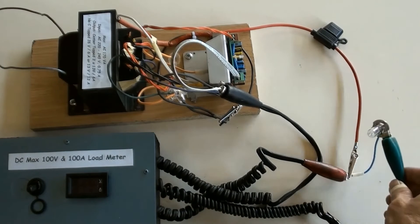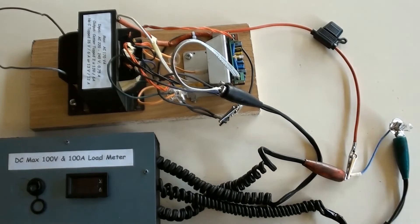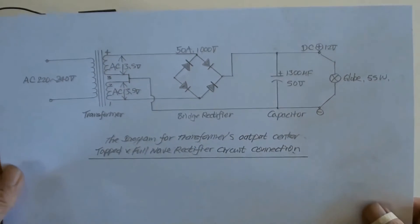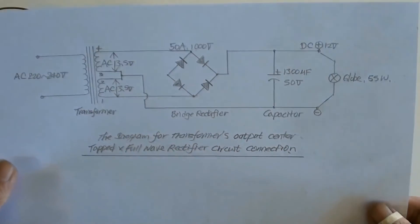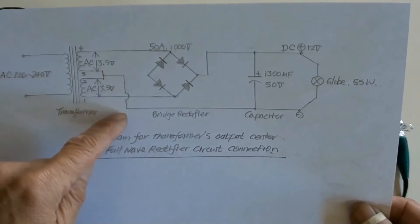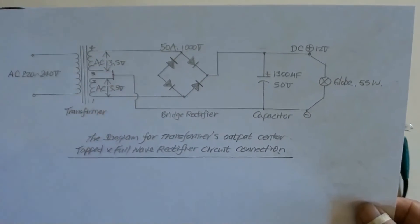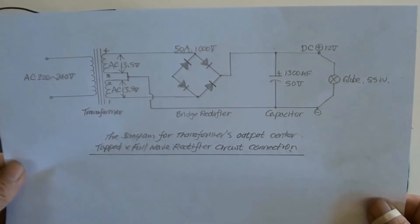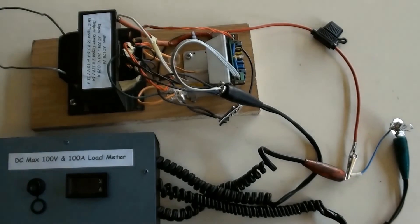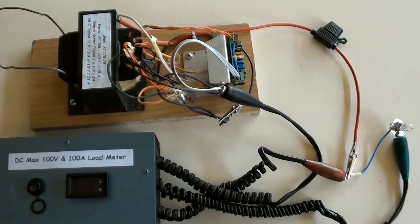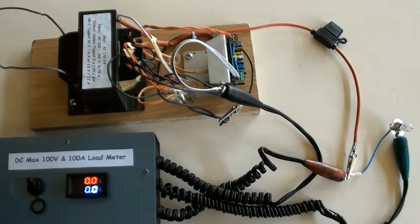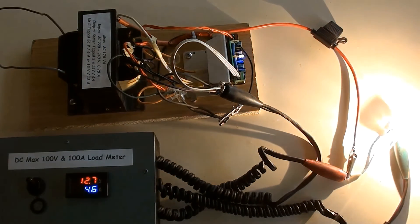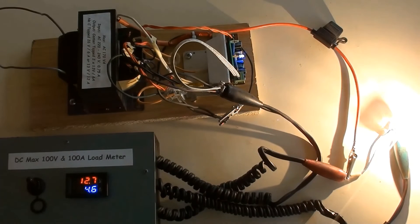The load of output has been changed to a DC 12 volt 55 watt globe. This is the circuit connected diagram, and the transformer's output is the center-tapped connection. Please note one of the bridge rectifier's terminals is not connected. Switch the load meter on, live power on, globe lights. The load meter showed DC 12.7 volts and 4.6 amperes.